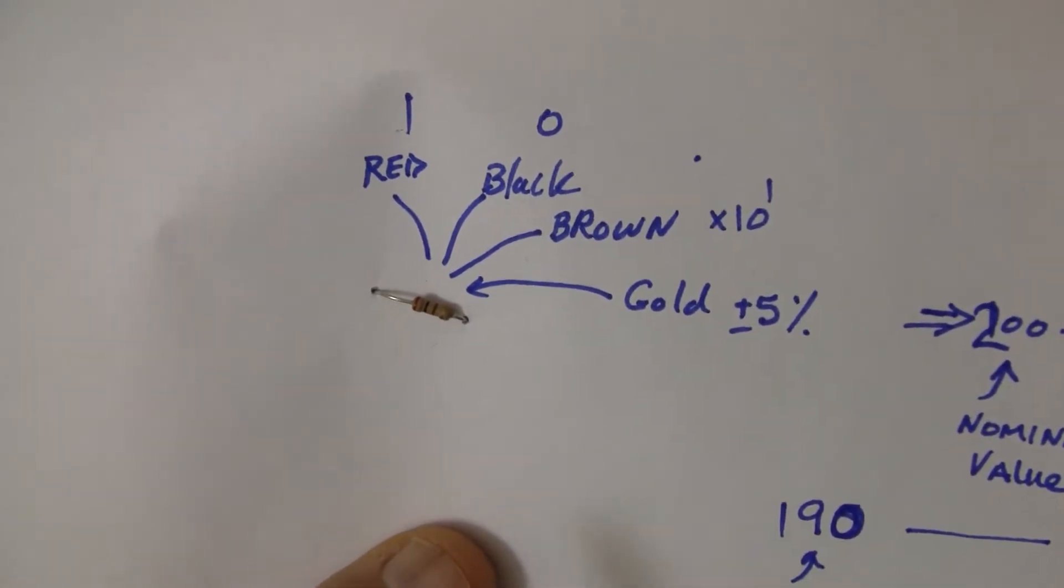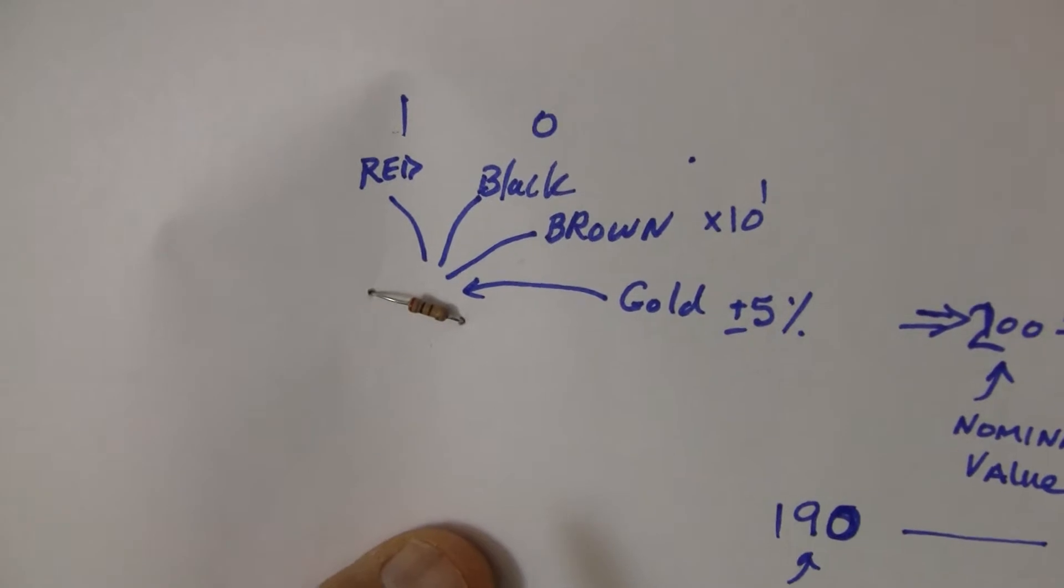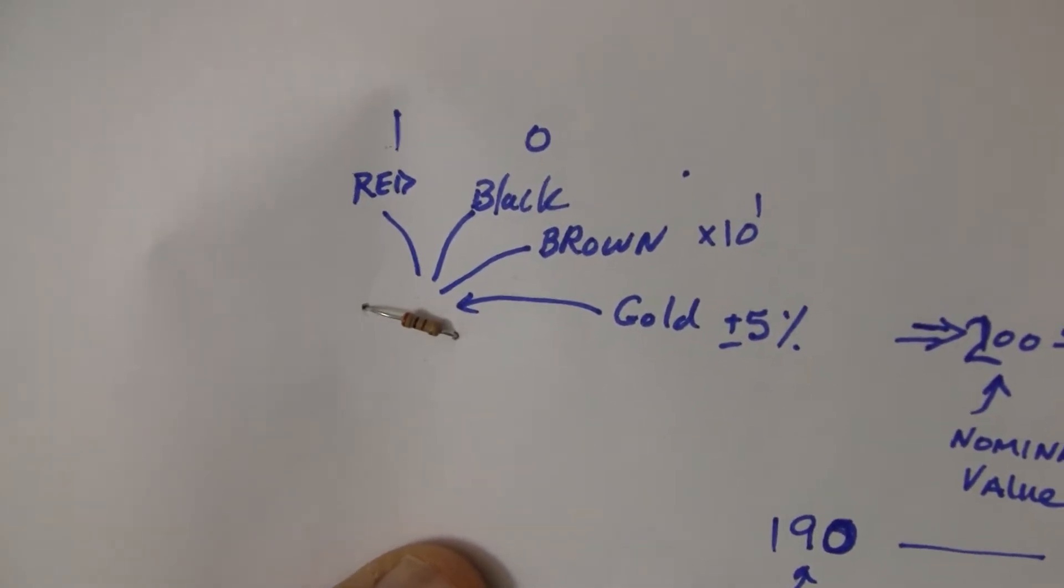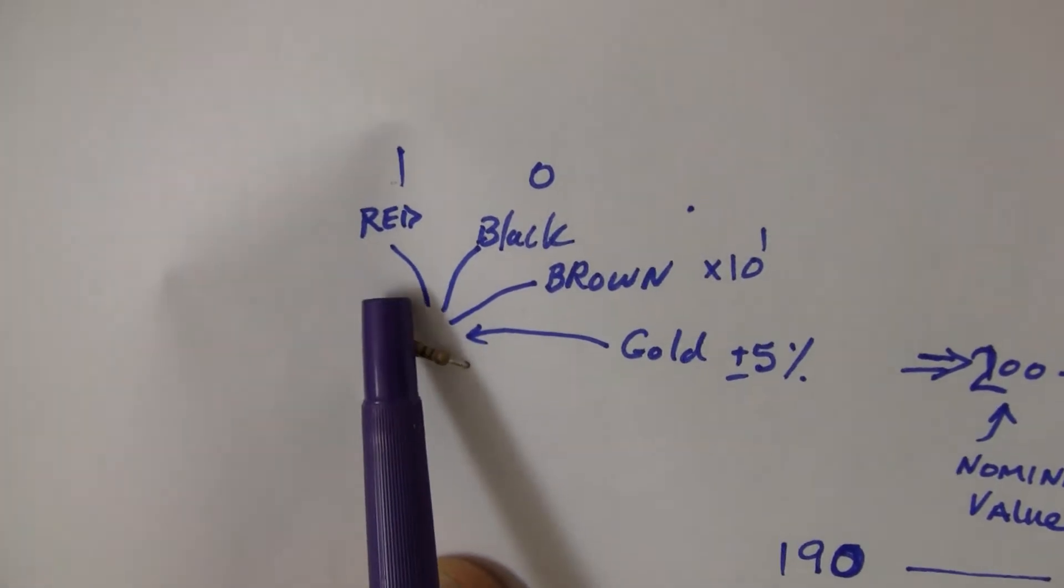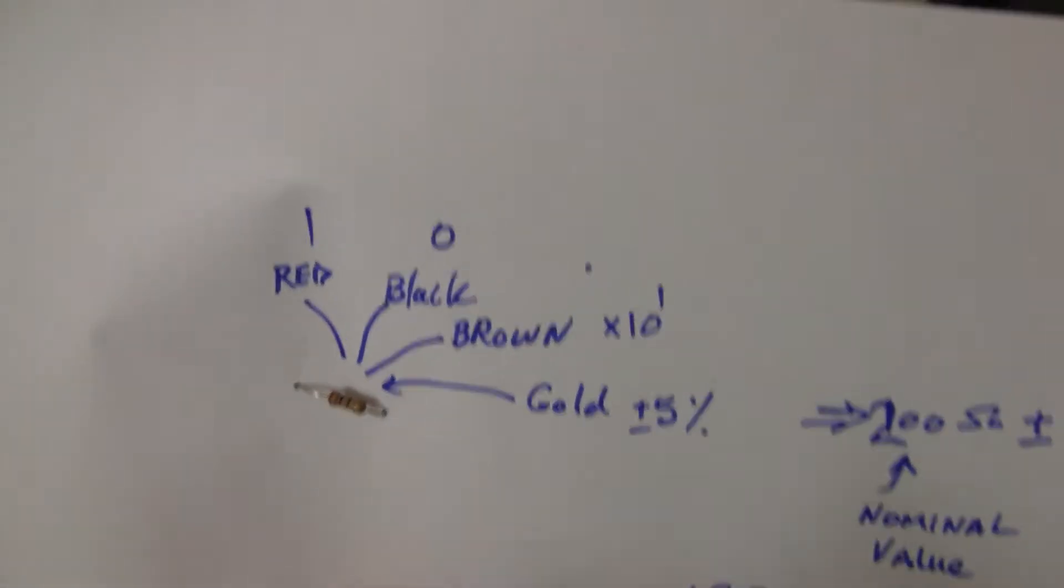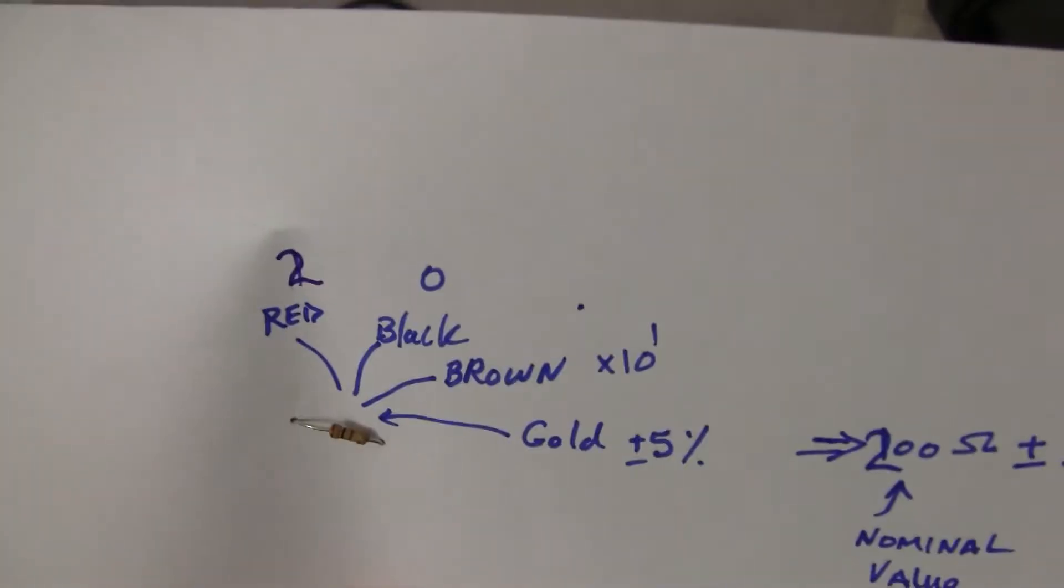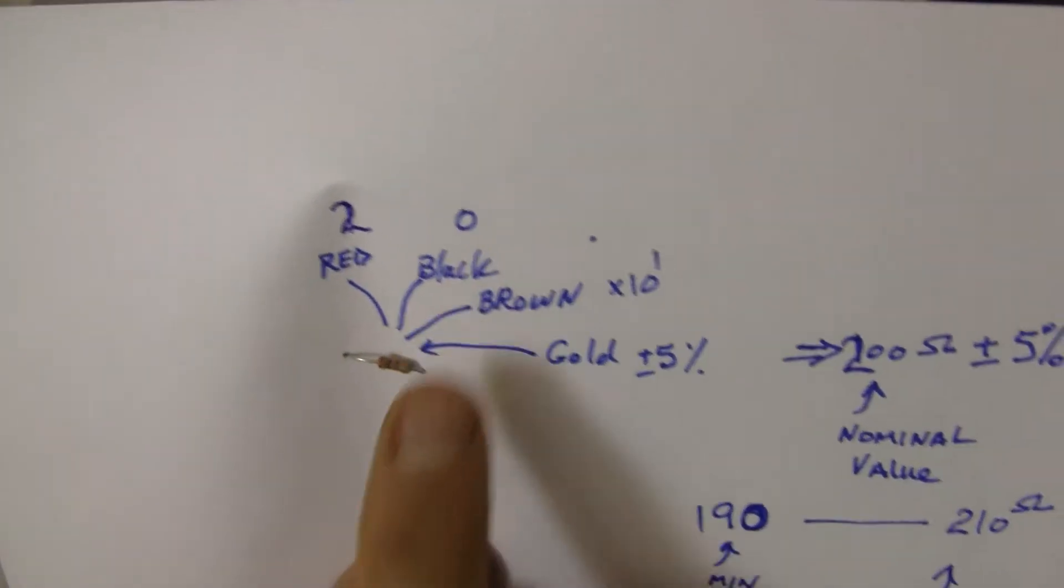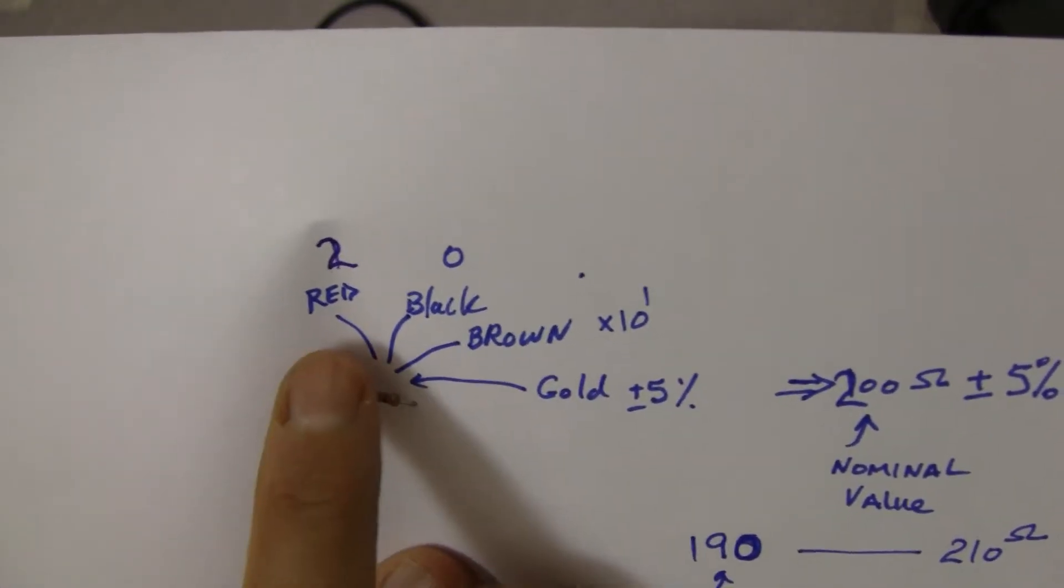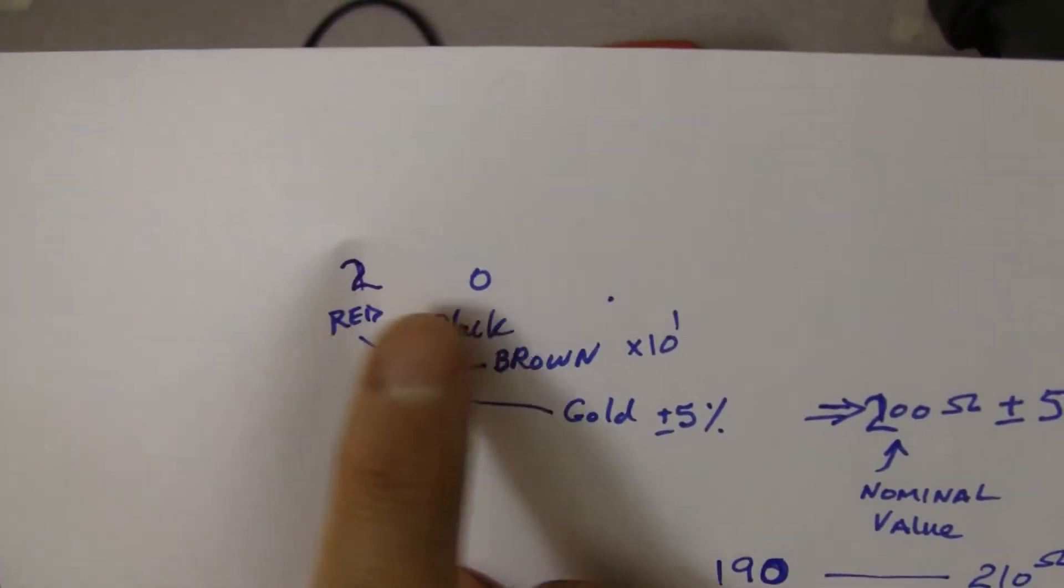If you haven't looked at it, on engrcs.com, there is a table which tells you what the bands mean. The red, the first red gives us two. Red is two, black is zero, brown is one. So the first two just give you a digit, so this becomes 20.